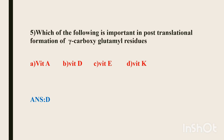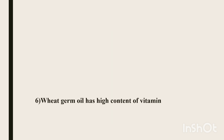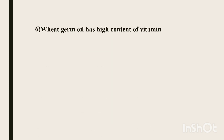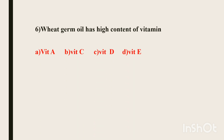Sixth question. Wheat germ oil has a high content of which vitamin? Options are vitamin A, vitamin C, vitamin D, and vitamin E. The answer is vitamin E. Wheat germ oil is rich in vitamin E and is a good source of it.